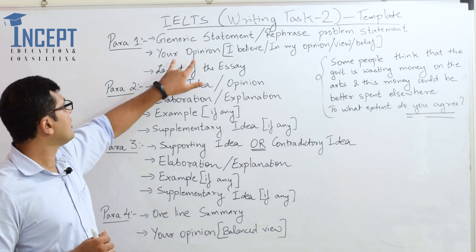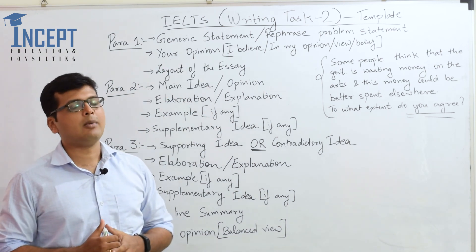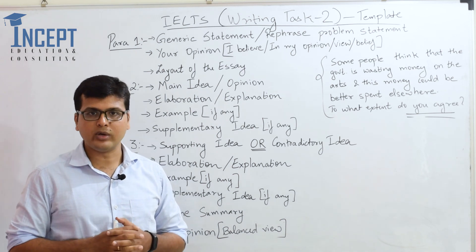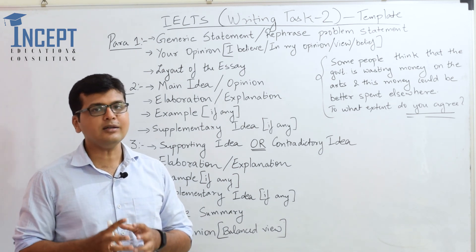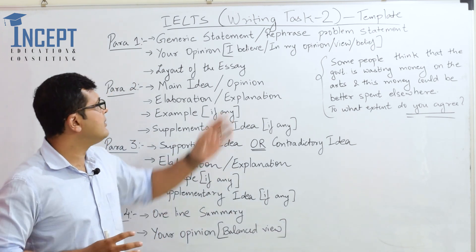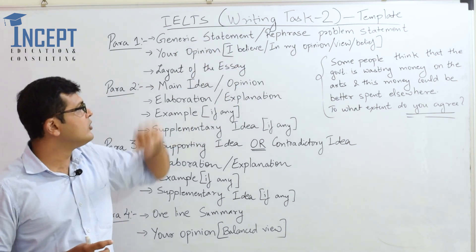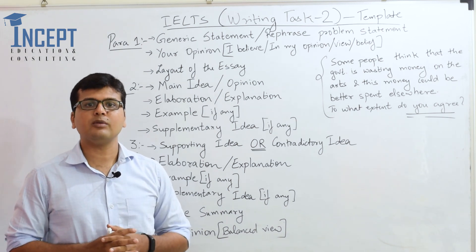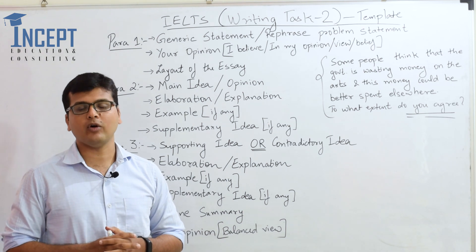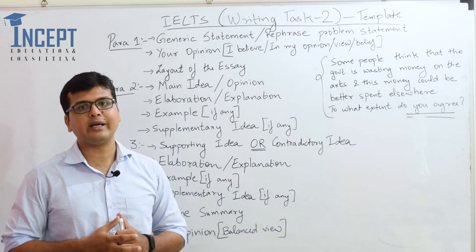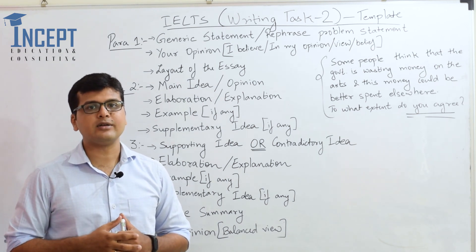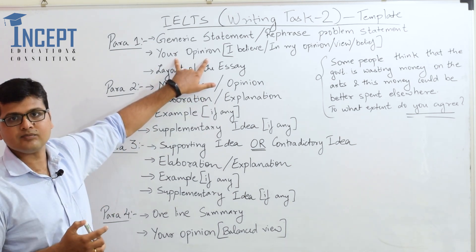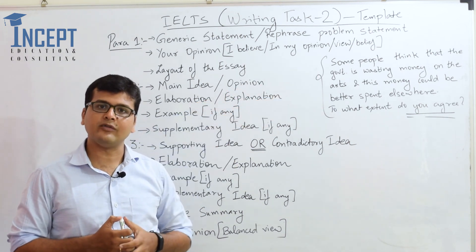The second part of the introduction is your opinion, stated upfront. You need to be positively neutral — thus you can write: 'In my opinion, or in my view, or I believe that it is very important for any nation to spend certain resources on the preservation as well as development of art forms.' Upfront, you are supporting the idea that the government should allocate certain resources to the arts, and you are being a little positively neutral in line with the essay itself.